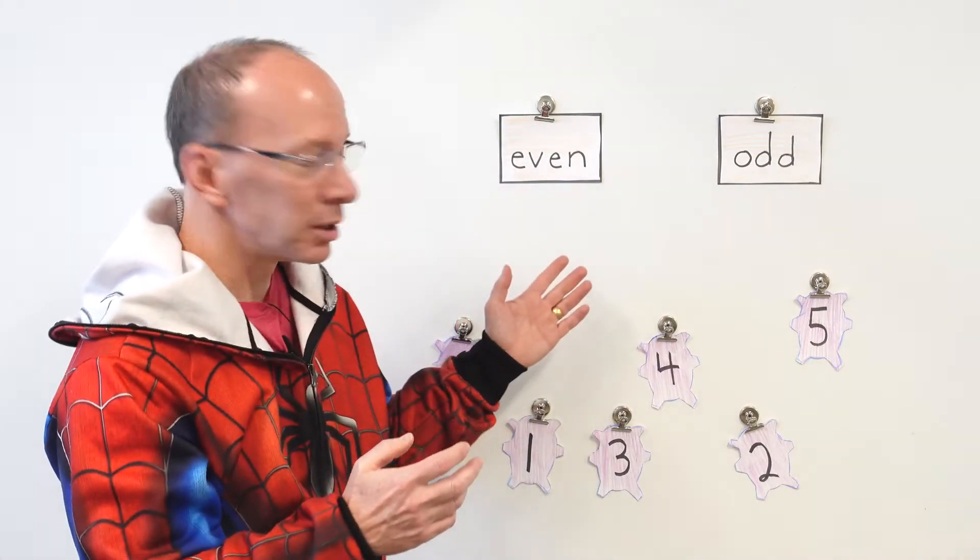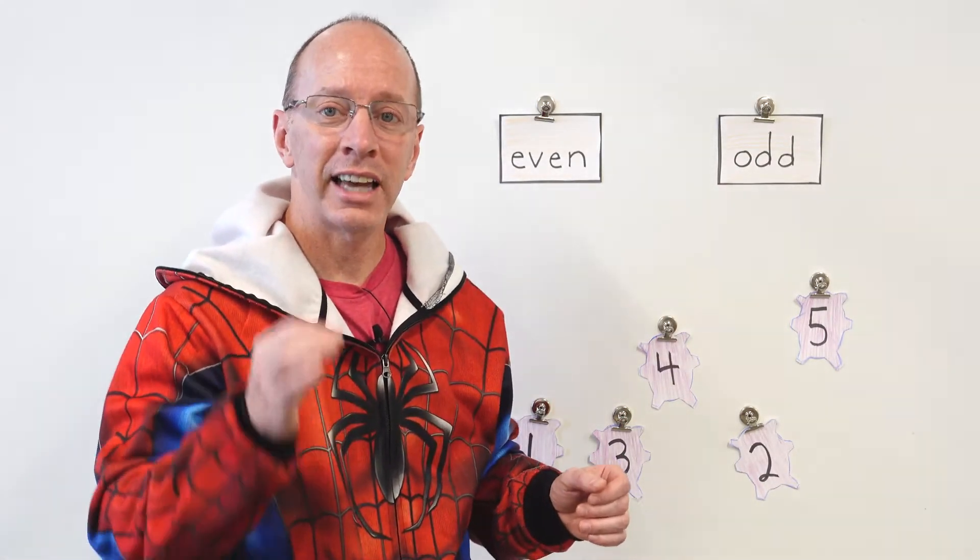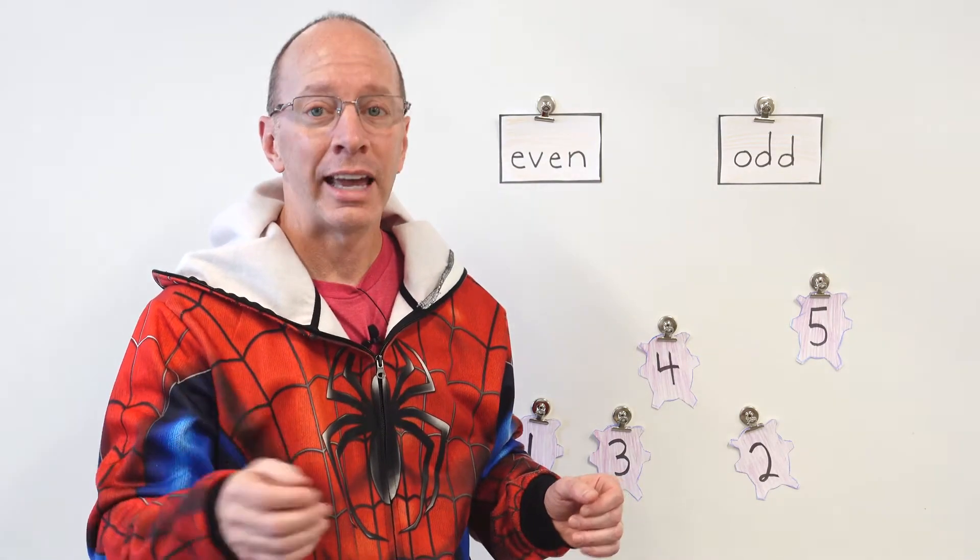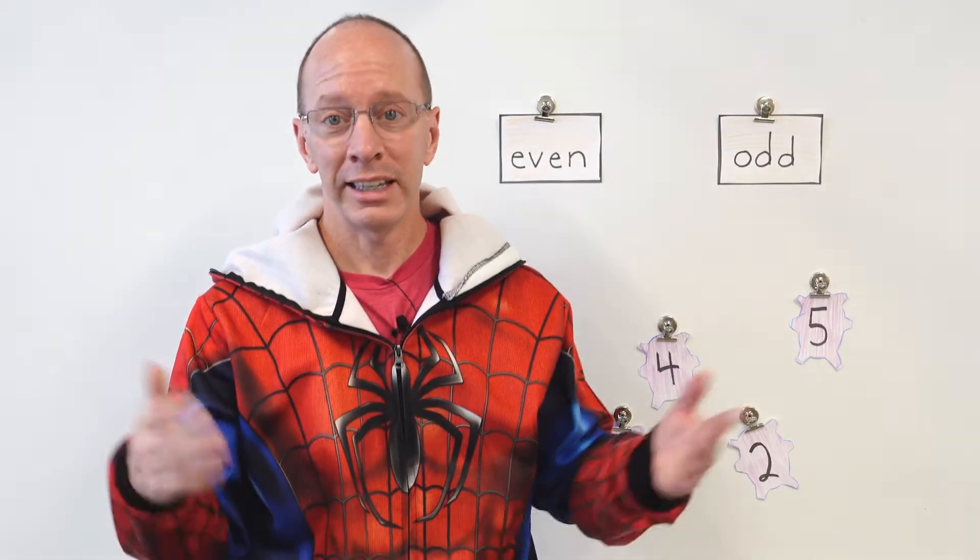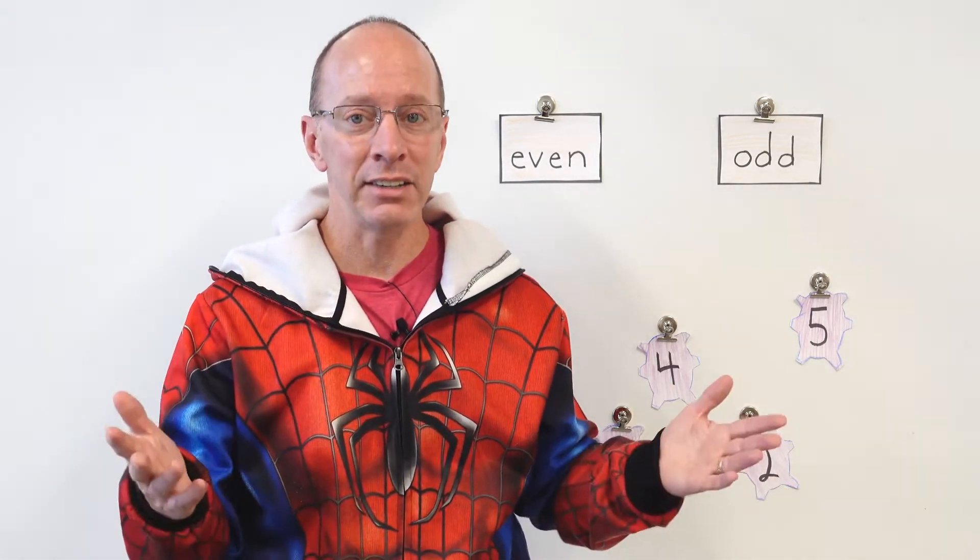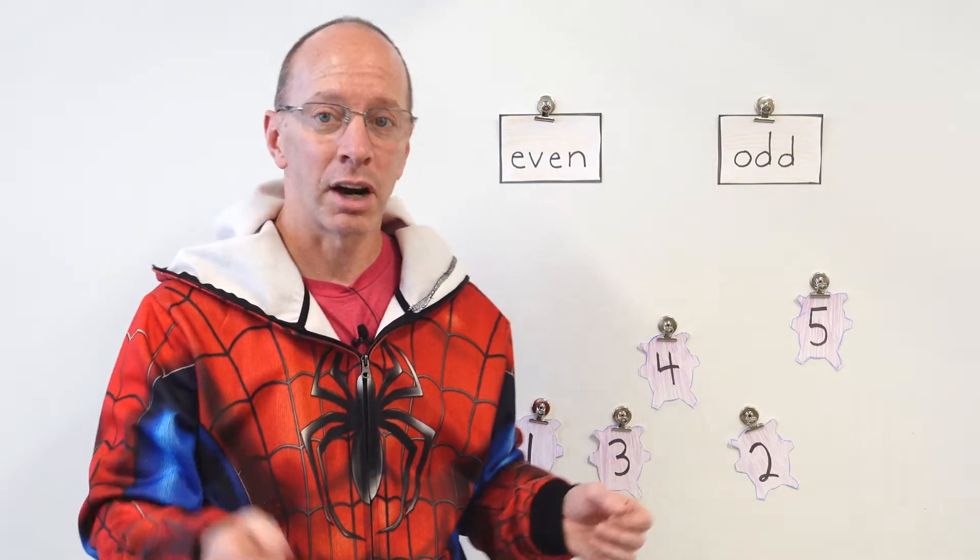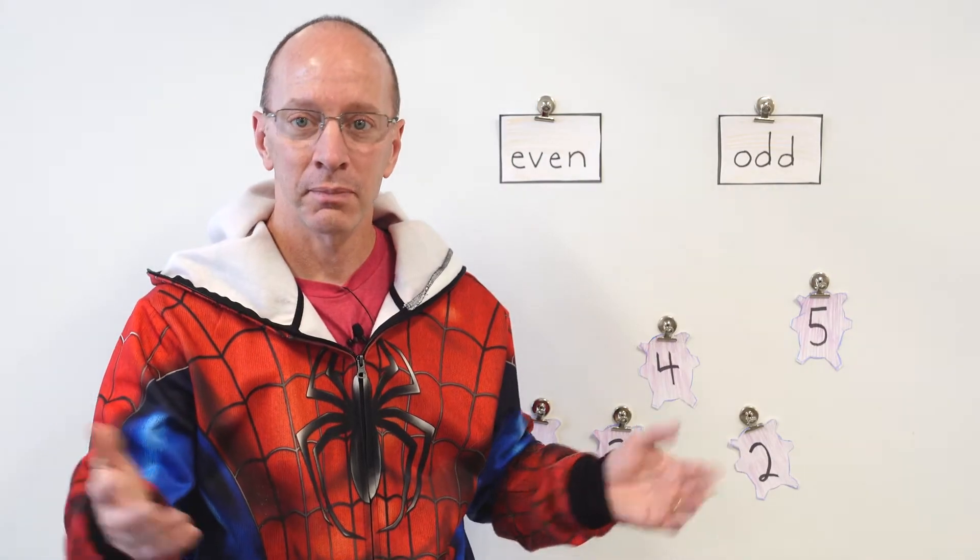Our even numbers are 2, 4, 6, 8, 10. And don't forget about zero. Because if you have zero on this side and you have zero on that side, it's even. If you have two on this side and two on this side, it's even. So even numbers are 0, 2, 4, 6, 8. And it continues.